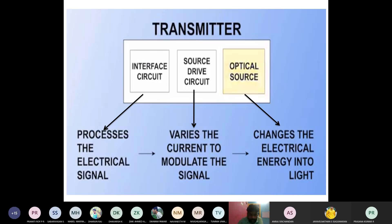The interface circuit processes the electrical signal. Whatever information we initially convey — audio, video, or voice — it has to be processed first. That initial processing is done with the help of the interface circuit.